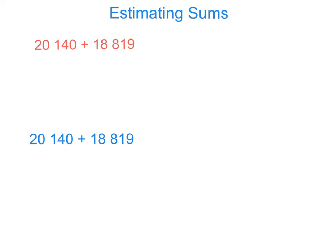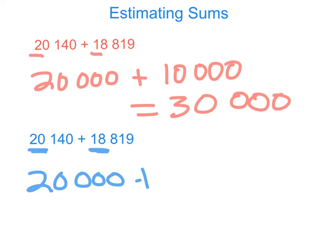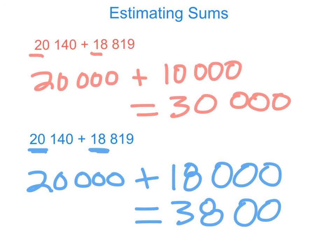When we first started rounding using the first digit of each number, we got 20,000 plus 10,000 equals 30,000. Then when we looked at the first two digits, we got 20,000 plus 18,000, which gave us an answer of 38,000 fans — a much more accurate answer. So when estimating sums using front-end rounding, it is recommended that you use the first two digits of every number when you estimate or round your answer.